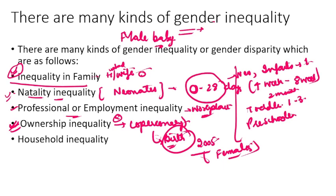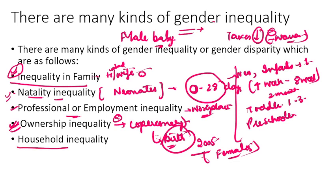इस वज़ह से, अगर women के नाम पे property registered हो तो taxes कम पड़ते हैं। इसी वज़ह से आजकल जो लोग जमीनें खरीदते हैं वो usually अपनी wives के नाम पे खरीदते हैं, ताकि tax थोड़ा कम pay करना पड़े।